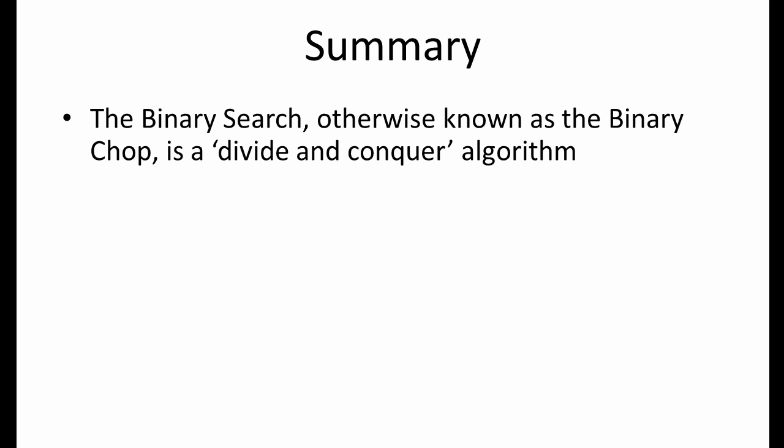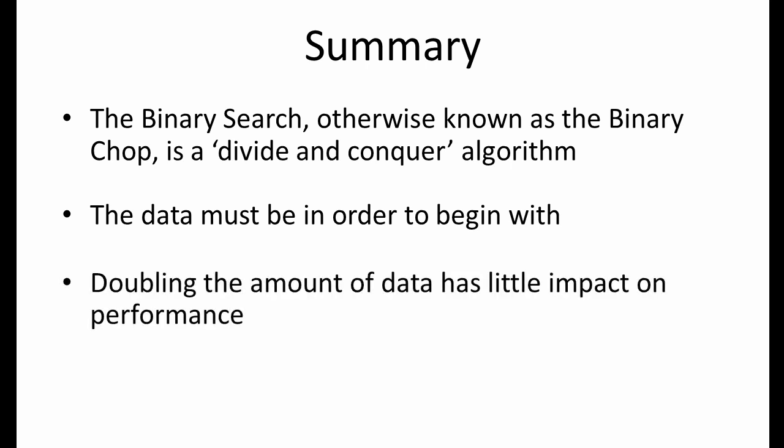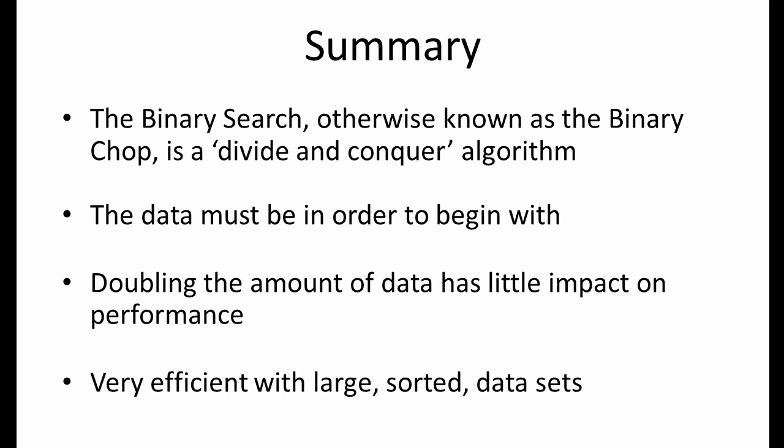To summarise then, the binary search, otherwise known as the binary chop, is what is known as a divide and conquer algorithm. We're continuously chopping the data set in half and having to consider half as much data each time. It's crucial that the data is in order to begin with, otherwise the binary search won't work. Doubling the amount of data has little impact on the performance of this algorithm. If you think about it, if you go from one million to two million items of data, you only need to perform one more chop — and that means we have a very efficient way of searching large sorted data sets.